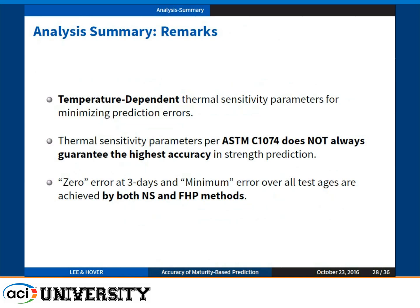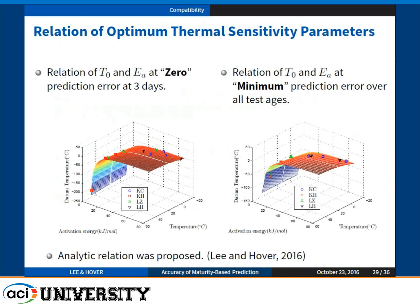The datum temperature that gives zero error and the activation energy that gives zero error from all different data sets show a rigorous relationship between the two. For overall test stages, the datum temperature and activation energy at minimum prediction error also have a rigorous analytical relationship as a function of temperature. You can refer to papers we have generated on this topic.